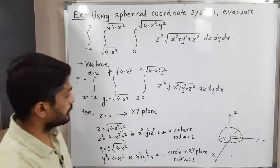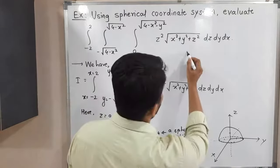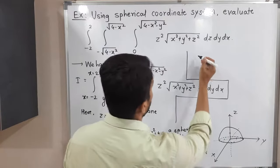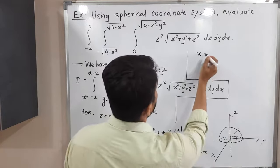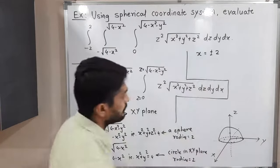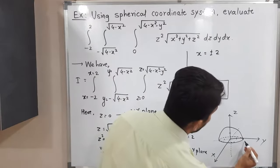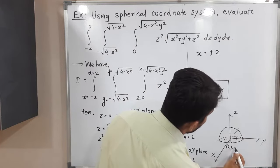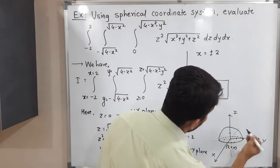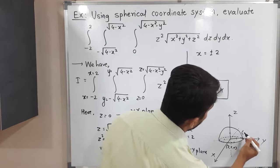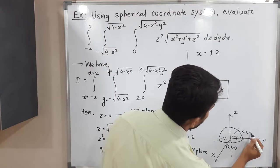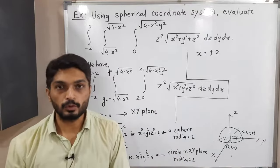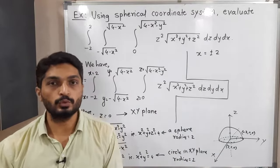X equals plus or minus two. The radius is two, so one point will be (2, 0, 0) and on the opposite side, we will have the point (−2, 0, 0). So obviously X varies from minus two to two.